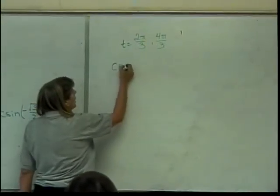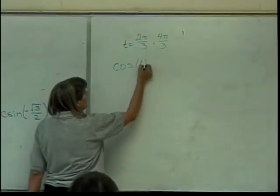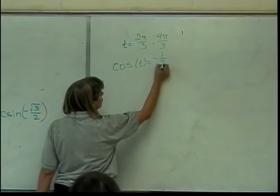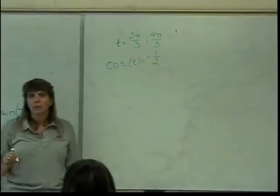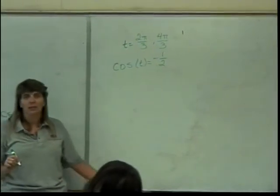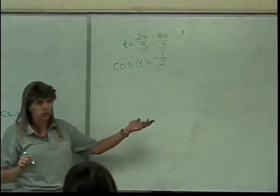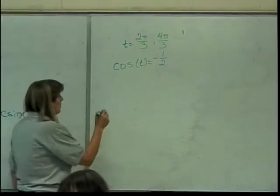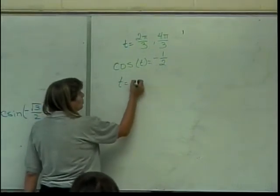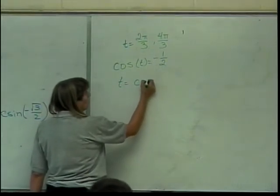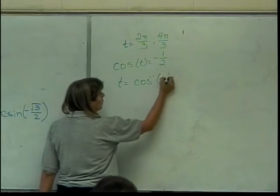So I have the cosine of T is equal to negative one-half. You've got to have at least some of the circle memorized to answer the next question. T is equal to the cosine inverse of negative one-half.